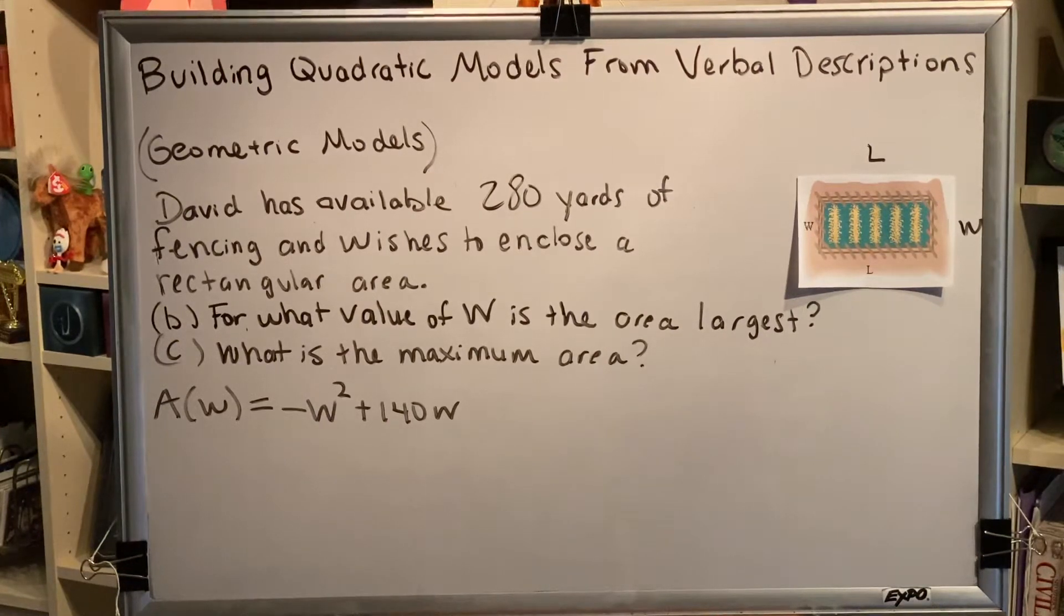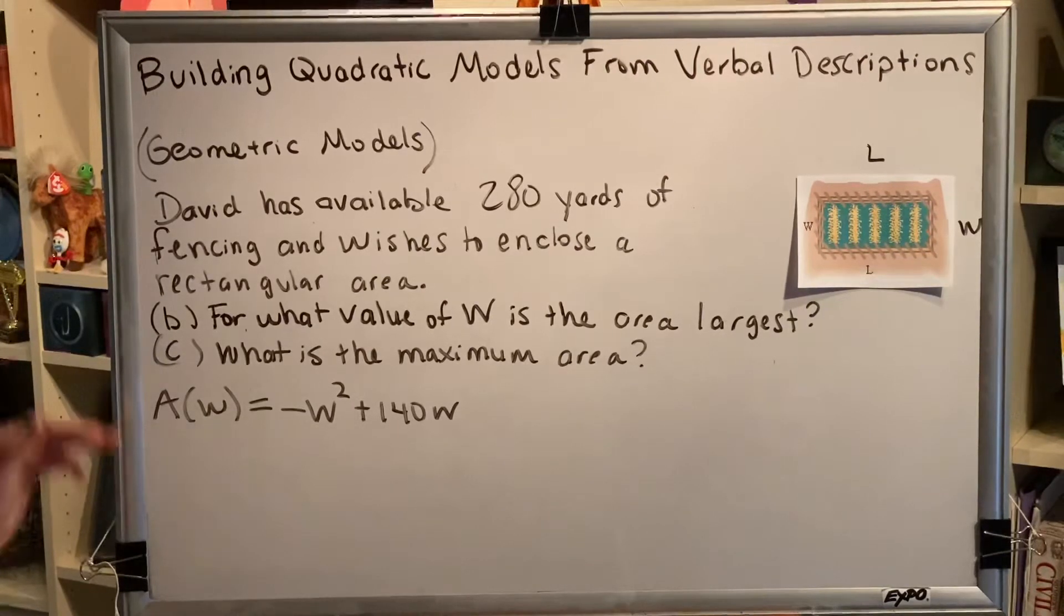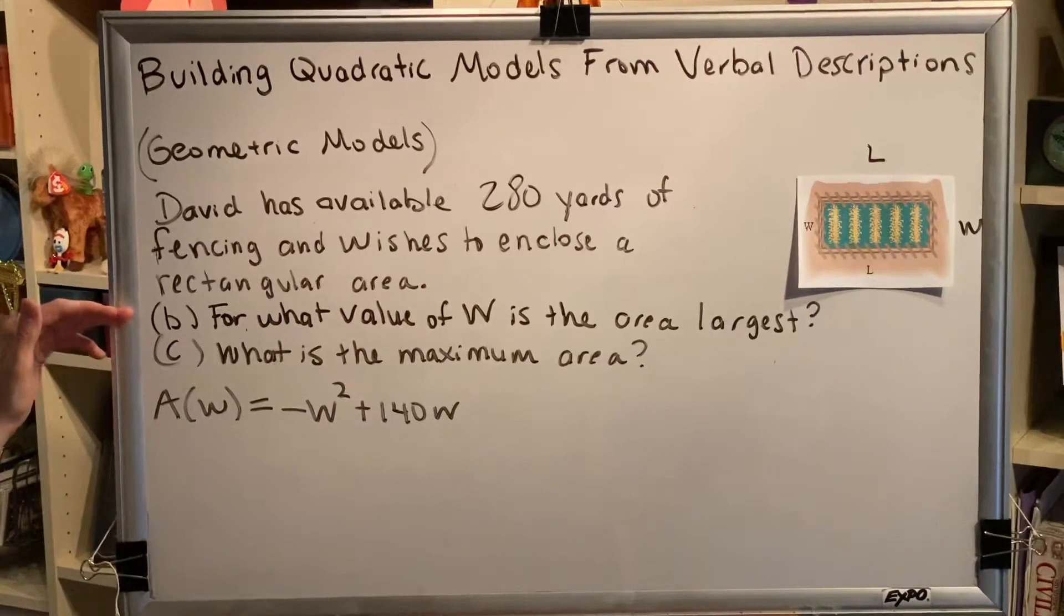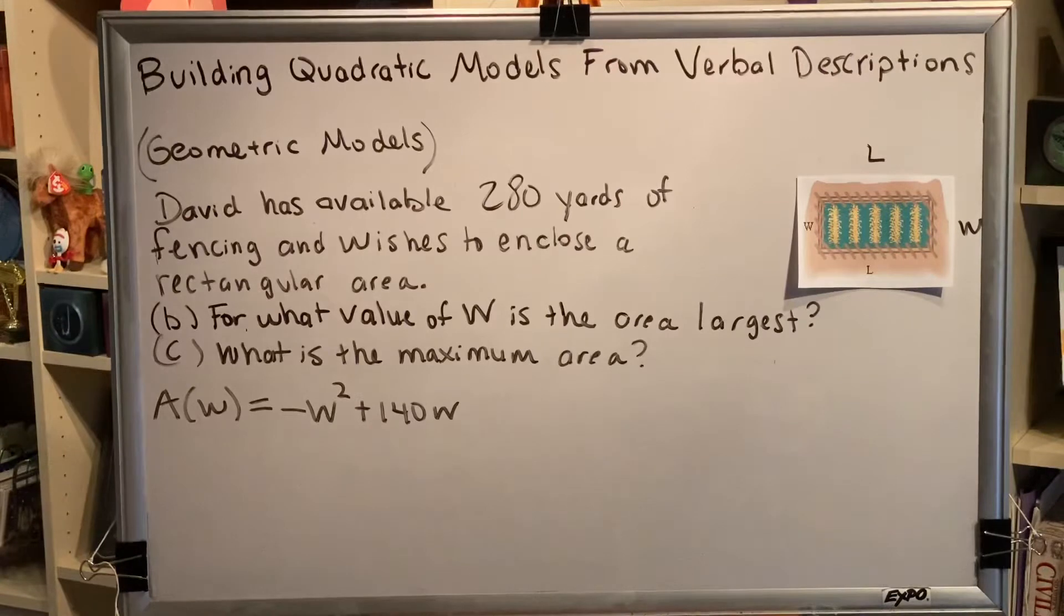The topic of this video is building quadratic models from verbal descriptions, geometric models. This is a continuation of the previous video. We now move on to parts B and C. For what value of W is the area largest? What is the maximum area?